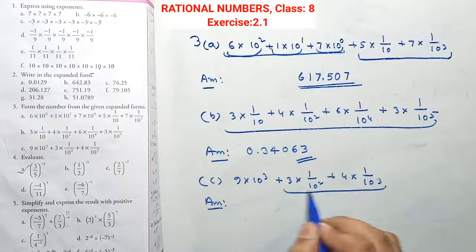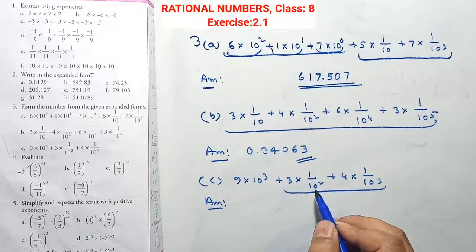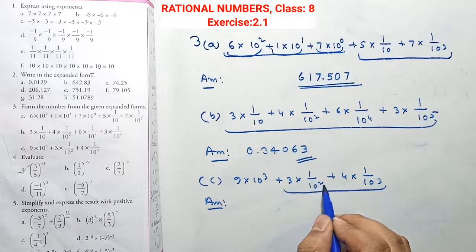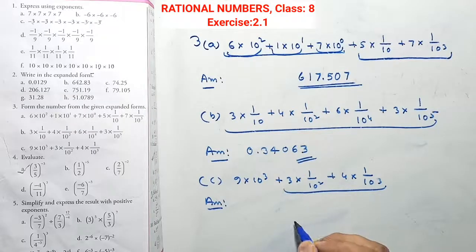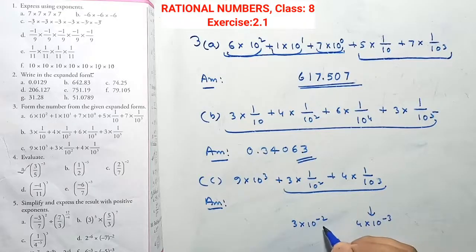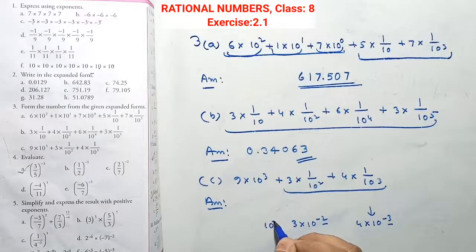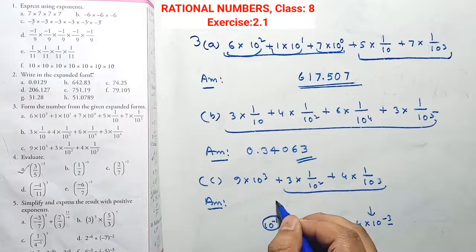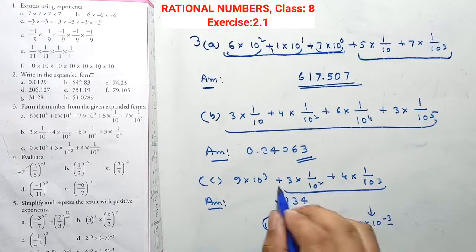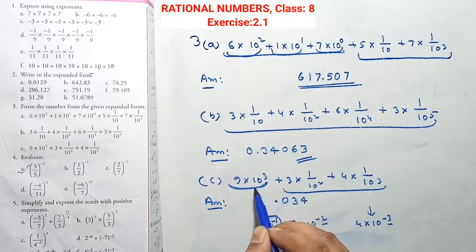This number is decimal because it uses 1/10, 1/10 squared, so we write 0.34063. This is the answer. For the next part: 3 into 1/10 squared = 3 into ten power minus two; 4 into ten power minus three. Ten power minus one is missing, so that part is missing. We write 0.034.